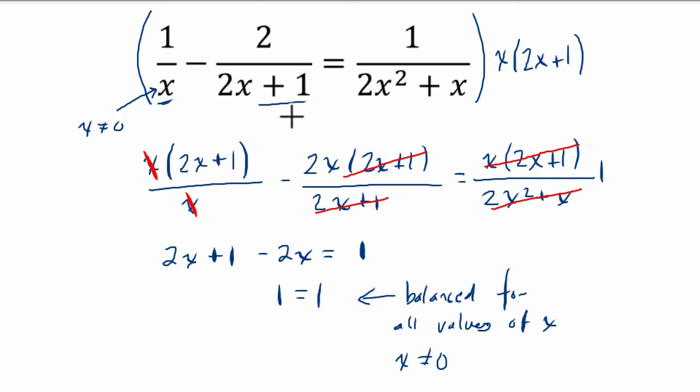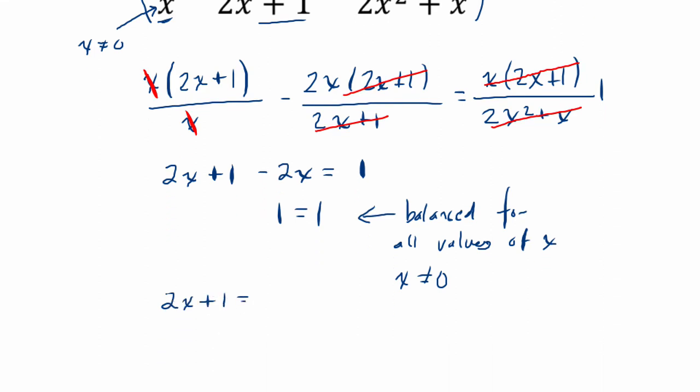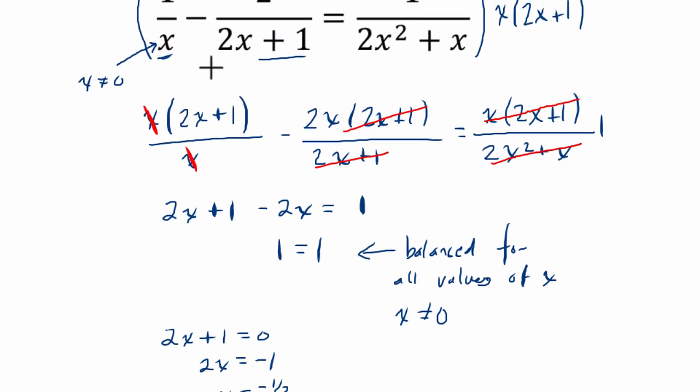The other value, now sometimes you have to go through and kind of sift it out, but the question is, is there a value for x where 2x plus 1 equals 0? And you might see that automatically but we can also figure it out. When does 2x plus 1 equal 0? We subtract 1 on both sides and divide by 2, and x equals negative 1 half. That's true because if x was negative 1 half, 2 times negative 1 half is negative 1, and negative 1 plus 1 is also 0, so that's another value of x that we can't have here.